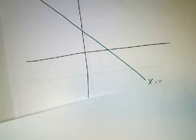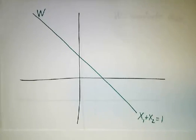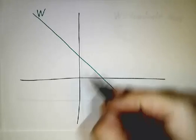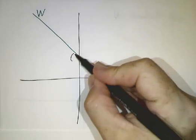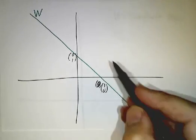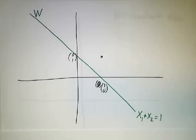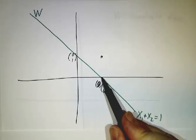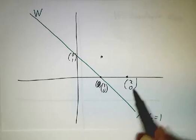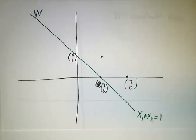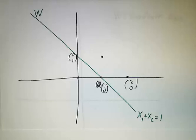Next example: x₁ + x₂ = 1. That's not closed under addition. Take the point (1, 0) and the point (0, 1) — their sum is (1, 1), which is not in W. It's also not closed under scalar multiplication: multiply (1, 0) by 2 and you get (2, 0), which isn't in W. And it doesn't contain the origin. Three strikes and you're out — this is not a subspace of R₂.